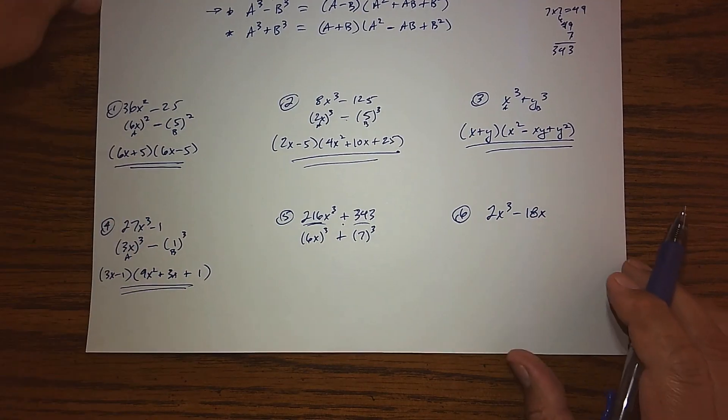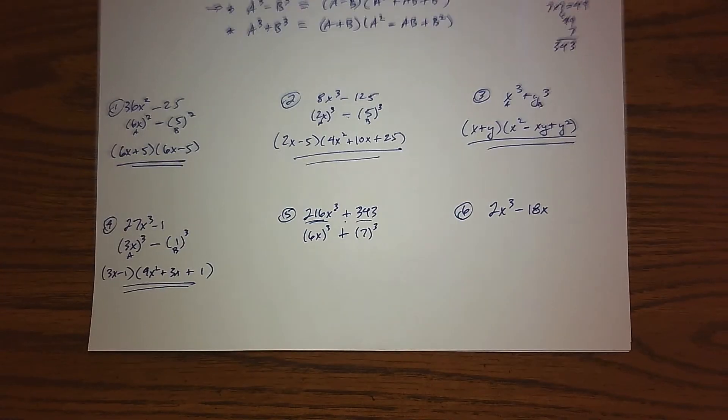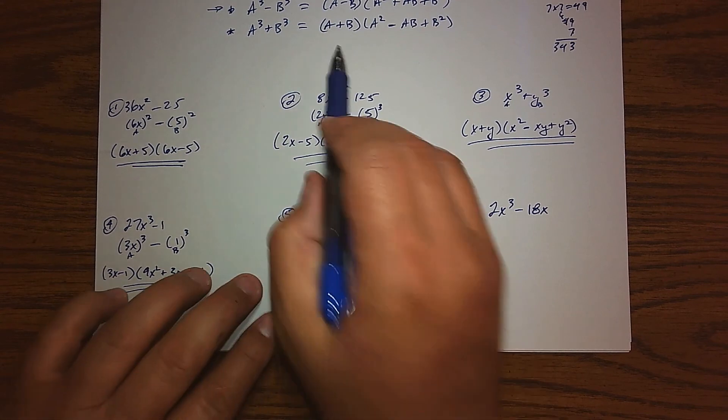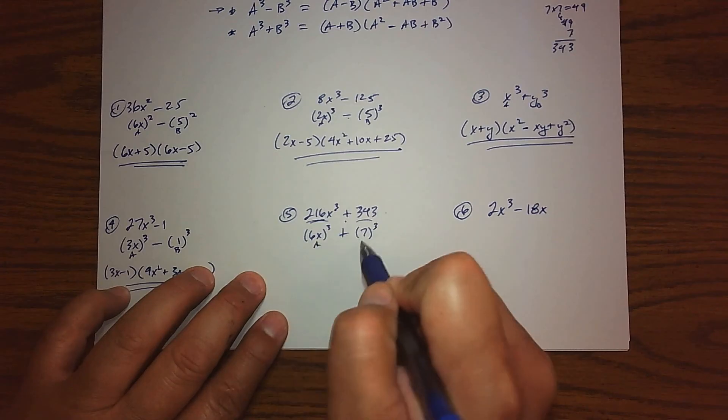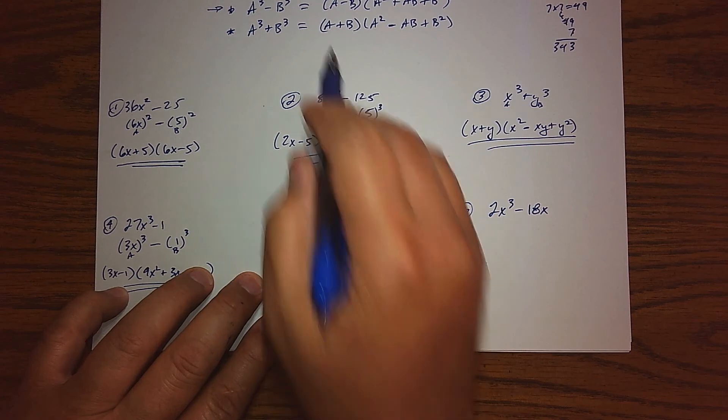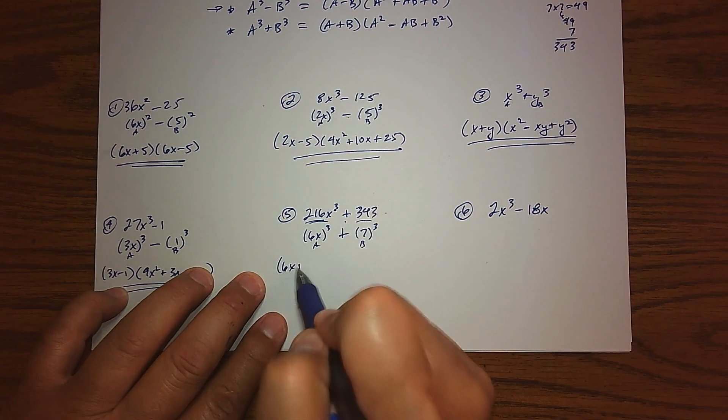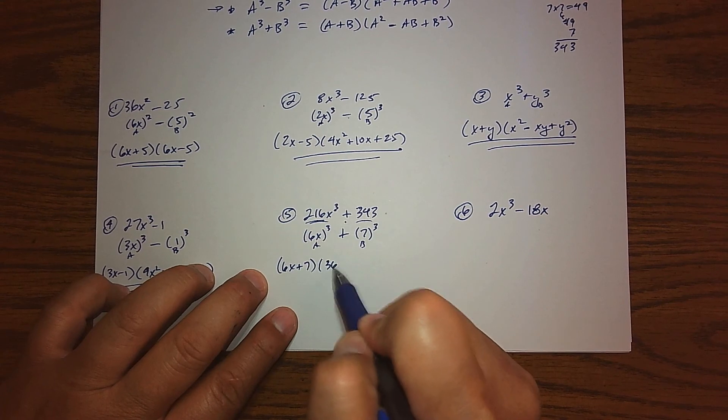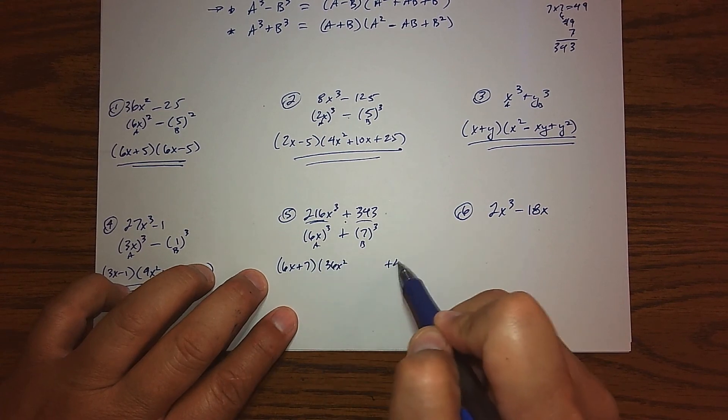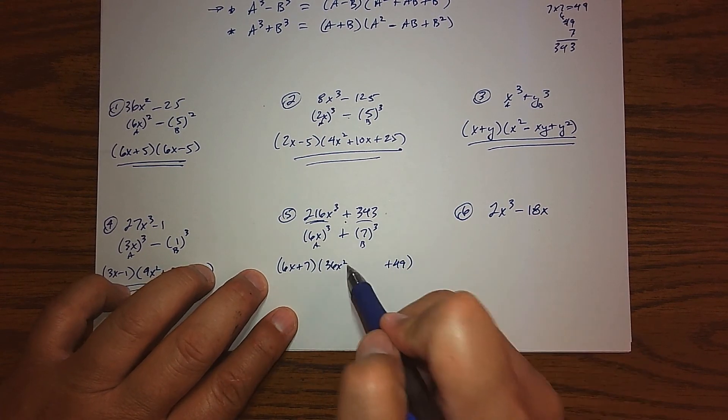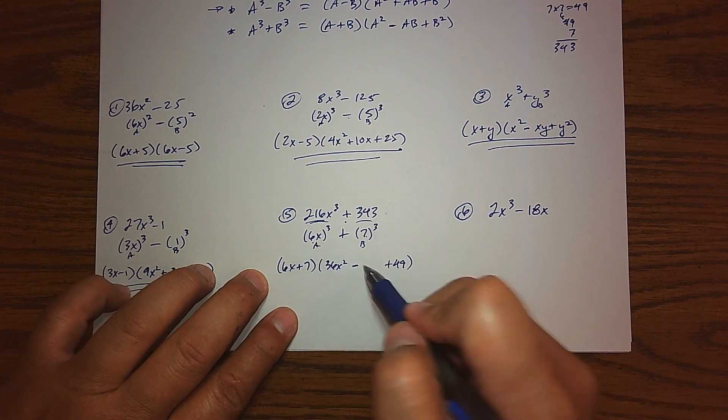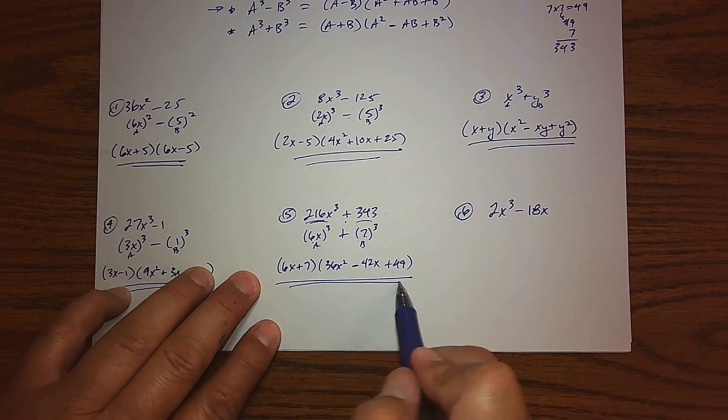6³ is 216, and 7³ is 343. For our purposes, we now know what a and b are. We have the sum of cubes, so according to the pattern, we're going to take those two bases and we're going to add them, we're going to take the first base and square it, we're going to take the second base and square it, and then we're going to subtract their product. So 6x times 7, that is 42x, and there is your factorization.